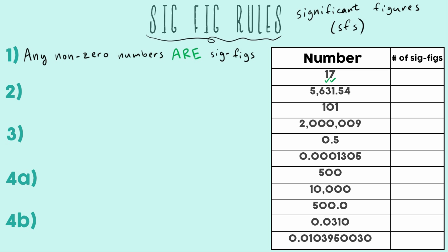That goes for 5,631.54 as well. It doesn't matter if there's a decimal point or it's a big number — as long as it's not a zero, that's always going to be a SIGFIG. So our 5, 6, 3, 1, second 5, and 4 are all SIGFIGs. The total number of SIGFIGs in this number is six.